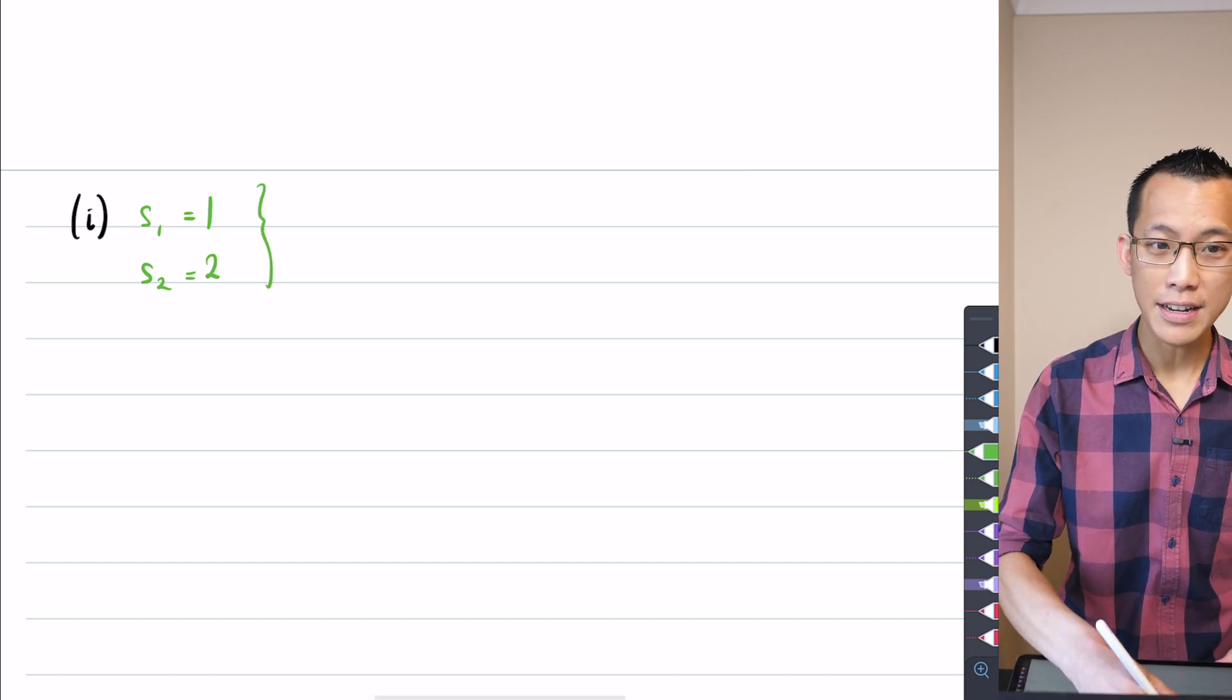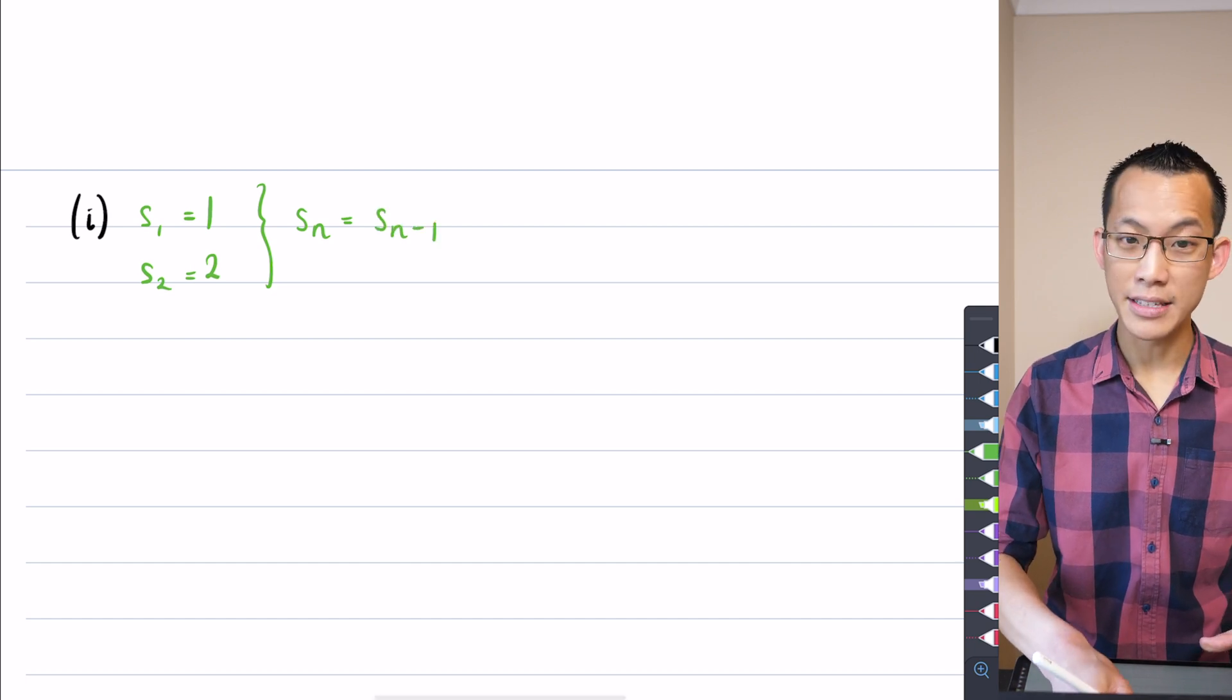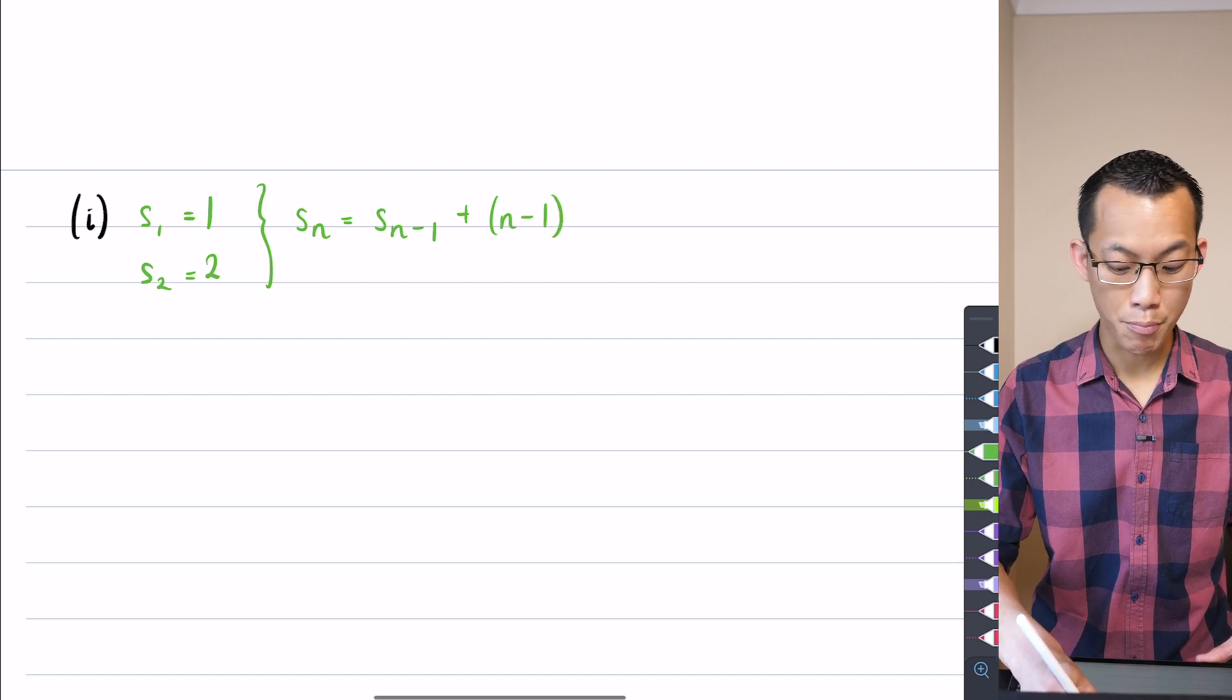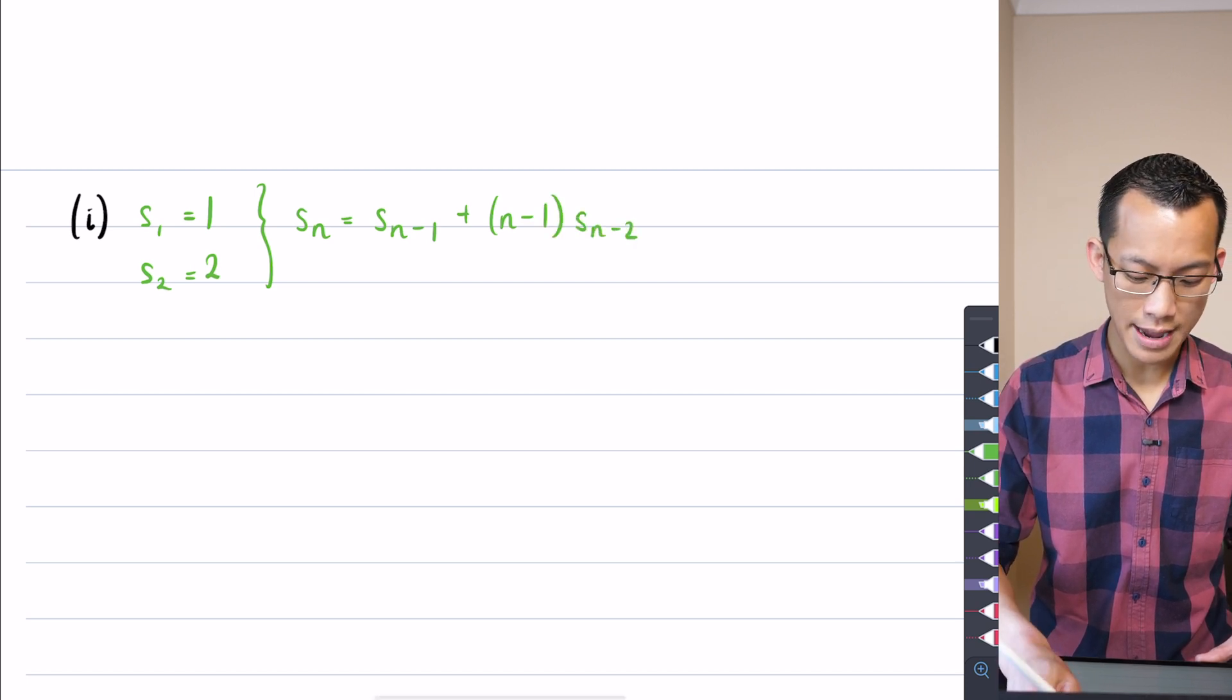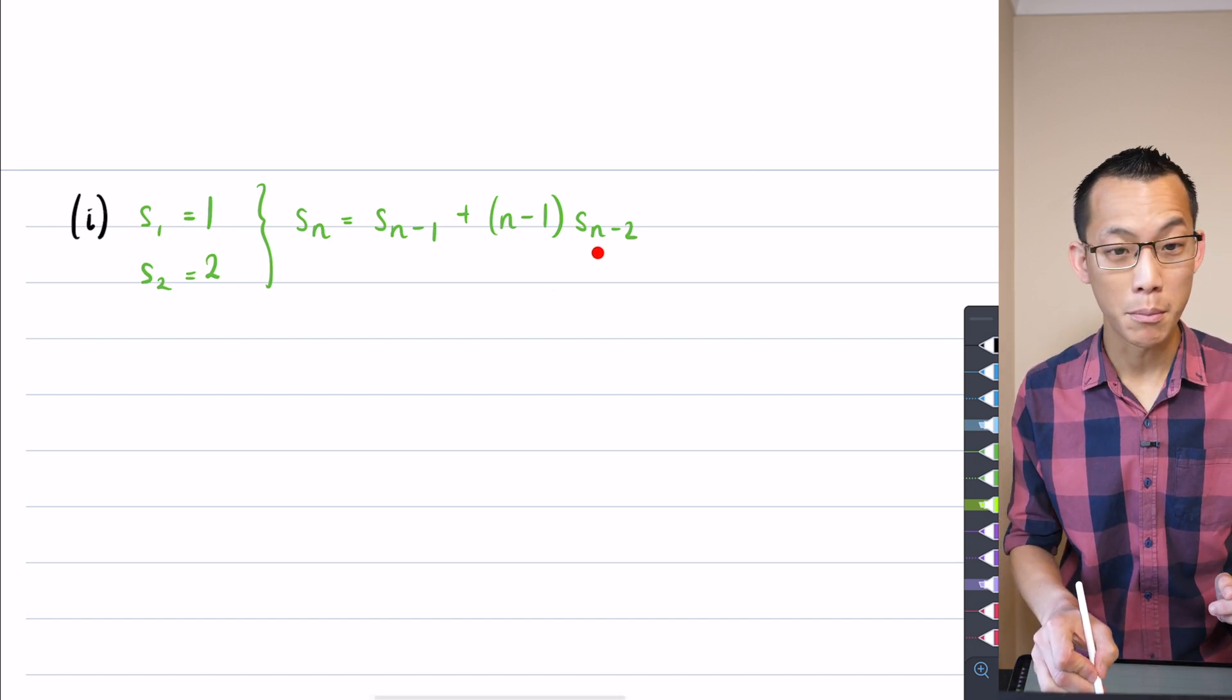These two feed into the fact that to get all the rest of the numbers, you say look at the previous term S_{n-1}, you then multiply the previous to that term by n minus 1. So that's why you've got the previous term and the one before that.